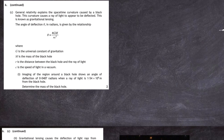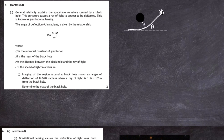Question 6c: general relativity explains the space-time curvature caused by a black hole. This curvature causes a ray of light to appear to be deflected, known as gravitational lensing. The star emits a ray of light, but as it approaches the black hole, the massive black hole distorts space-time and the ray of light is bent around it, so an observer thinks the star is in a different position.